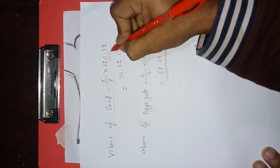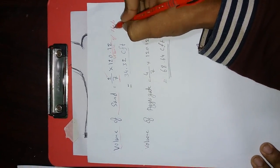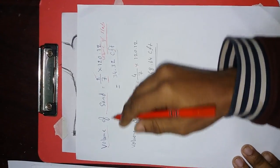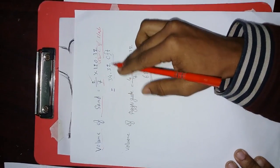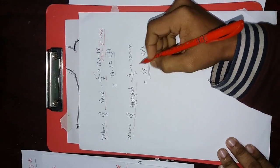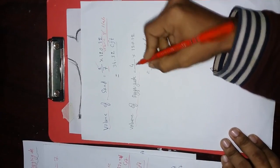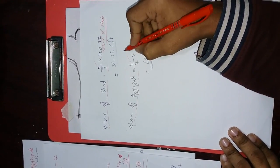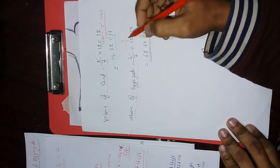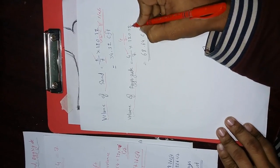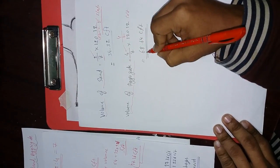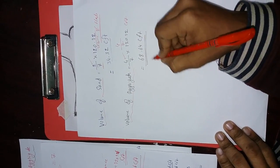Now you can click the volume of the slab. Here you can see the volume of aggregates. This slab is ratio 4, which is 120.12 cubic feet, so it can calculate for 68.64 cft.